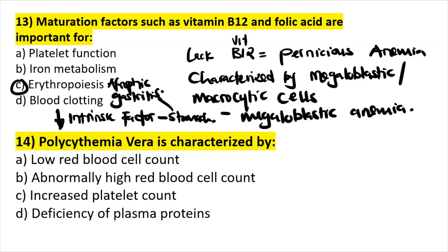Question fourteen: polycythemia vera is characterized by an abnormally high red cell count. This is correct.